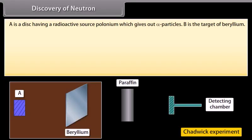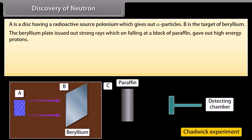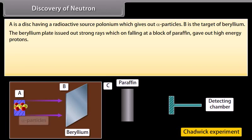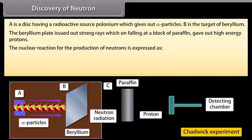Discovery of neutron: A is a disk having a radioactive source polonium which gives out alpha particles. B is the target of beryllium. Both A and B are placed in an evacuated chamber C. The beryllium plate issues out strong rays which, on falling at a block of paraffin, gave out high energy protons. The nuclear reaction for the production of neutrons is expressed as shown.